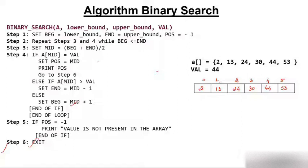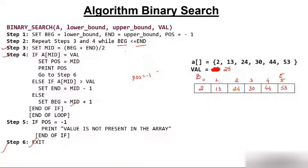Now let's give one more example. Suppose you want to search an element that is not in the list — say 25. As you can see, 25 is not in the array. Let's check if the algorithm handles this. We set beginning = 0, end = 5, position = -1. Beginning (0) is less than end (5), so we enter the loop and calculate mid = (0+5)/2 = 2.